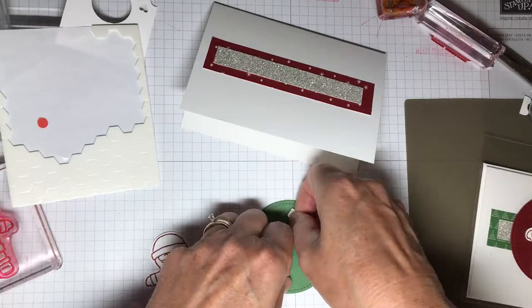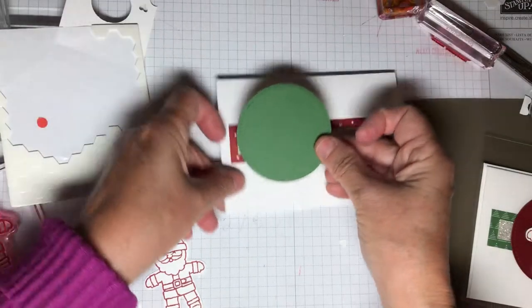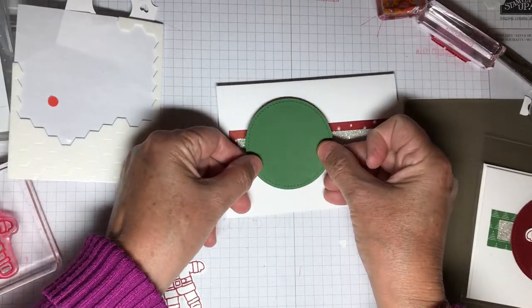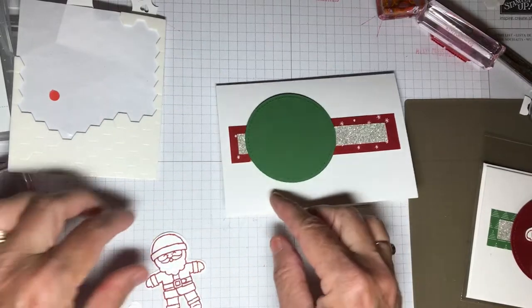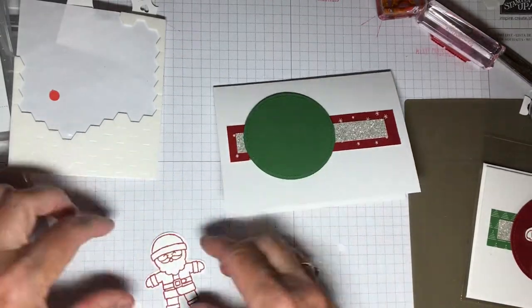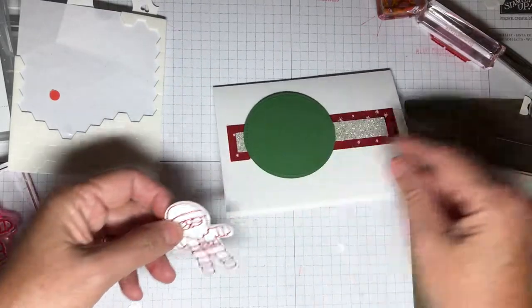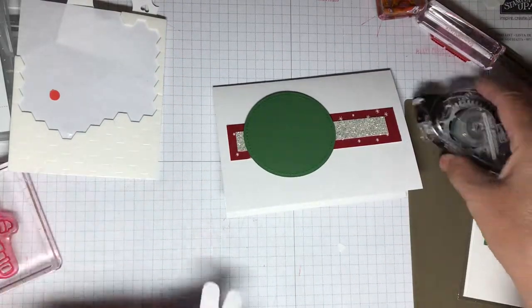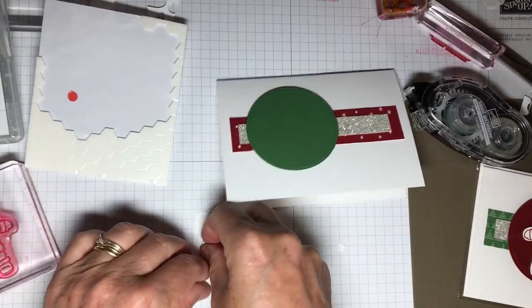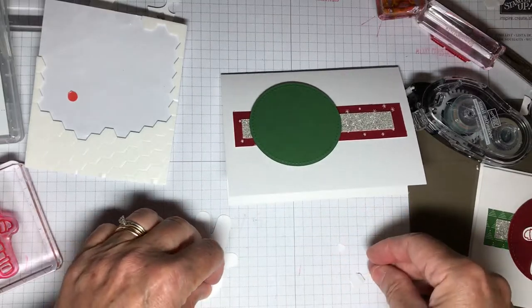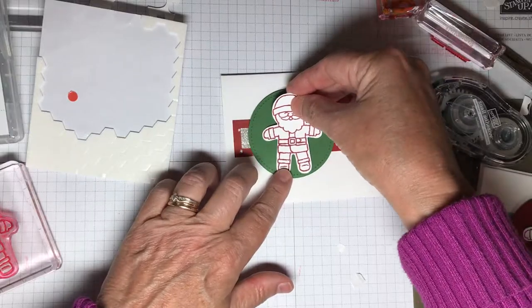Now this circle I cut out with this stitched framelits dies. You could use any circle punch you have. The nice thing with the stitched framelits is you get that extra little design in the punch or the paper when you do that. And then I'll use one more layer of dimensionals here. Just put him down.